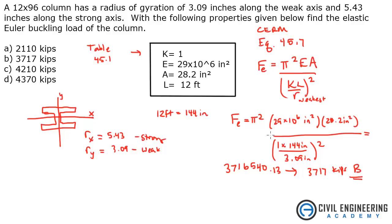I hope that helped. This goes over the Euler formula and will help you determine the strength of a column to make sure it won't buckle. Head to Civil Engineering Academy for more tips and tricks related to the PE exam.